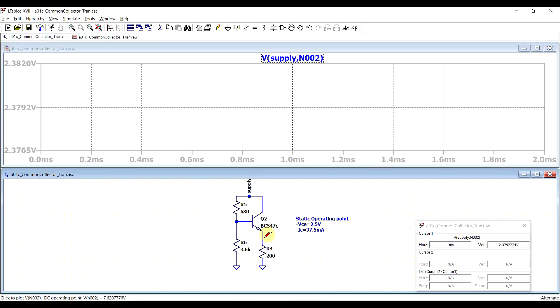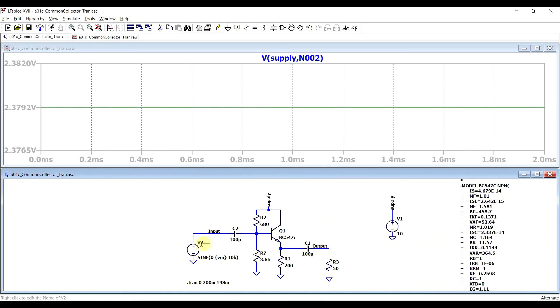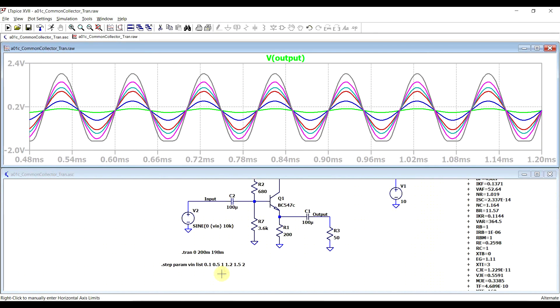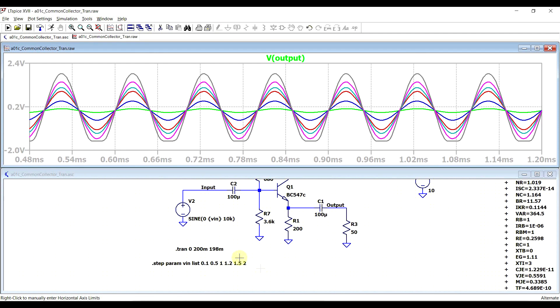And our collector emitter voltage 2.37, so close enough. We can also check that the large signal amplification behavior is the same.